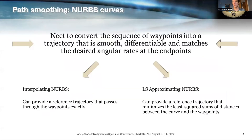The problem with several path planning algorithms is that they only compute a sequence of constraint-compliant waypoints that the spacecraft is supposed to track, but they provide no reference. By reference, I mean a trajectory as a function of time with associated velocities and accelerations — in our case, angular rates and accelerations. The solution I provide consists in using NURBS curves.